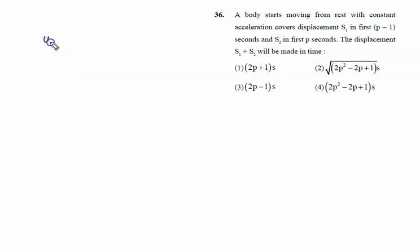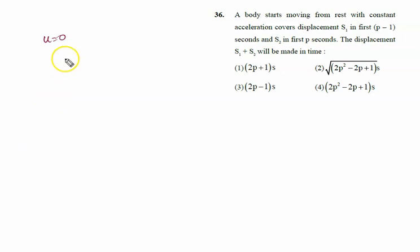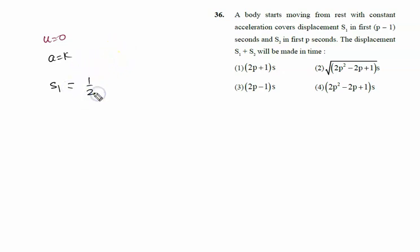A body starts moving from rest — u equal to zero — with constant acceleration. It covers displacement s1 in the first (p minus one) seconds. Starting from rest, s1 is given by ut plus half at squared. Since u is zero, s1 equals half a times (p minus one) squared. The displacement s2 is covered in the first p seconds, so s2 equals half a p squared.